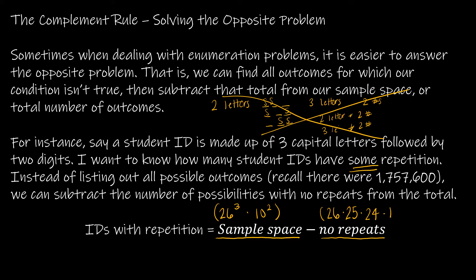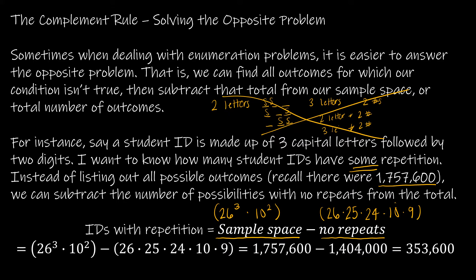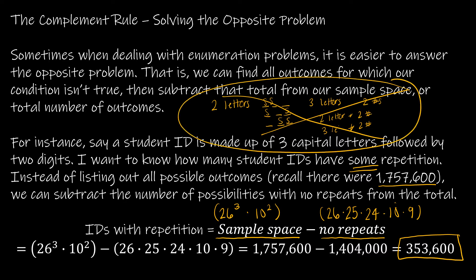For digits, I have 10 options for the first digit but only 9 for the second because I can't repeat. So using what we already know — the total sample space was 1,757,600 and the no-repeats count was 1,404,000 — I simply subtract those two and end up with 353,600. That's far easier than doing all that other work.